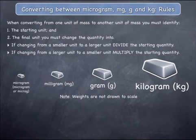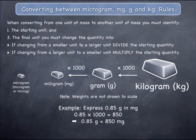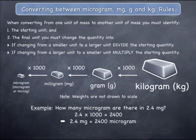Now let's consider three examples where a larger unit is changed into a smaller unit. If you are changing a quantity from kilograms to grams, you must multiply the starting quantity by 1000, as the example shows. If you are changing from grams to milligrams, you must multiply the starting quantity by 1000, as shown. And if you are changing from milligrams to micrograms, you must multiply the starting quantity by 1000, as illustrated.